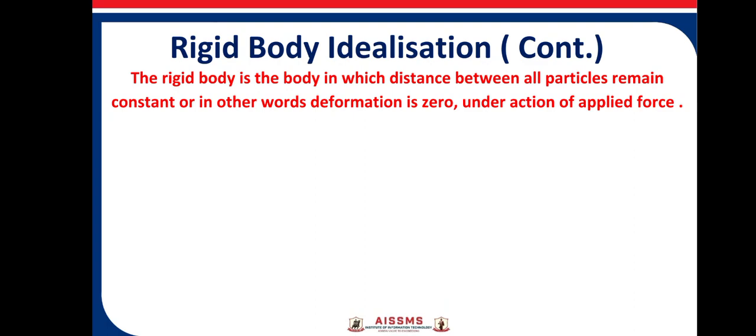Whatever body that we consider under the action of applied force for analysis in engineering mechanics is a rigid body. Now, what do you mean by a rigid body? It means there is no deformation in the body at all. We assume that a rigid body is a body in which two points inside the body will be at same distance after application of any external force.